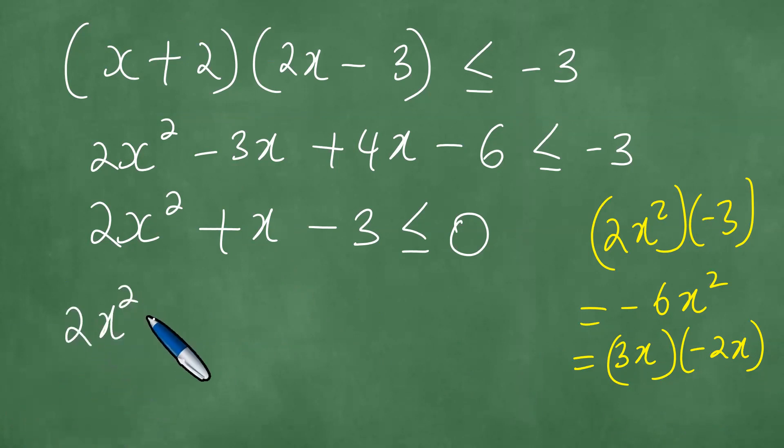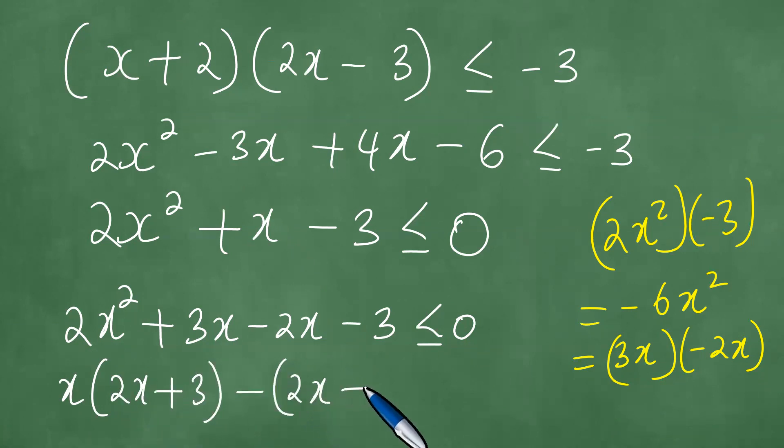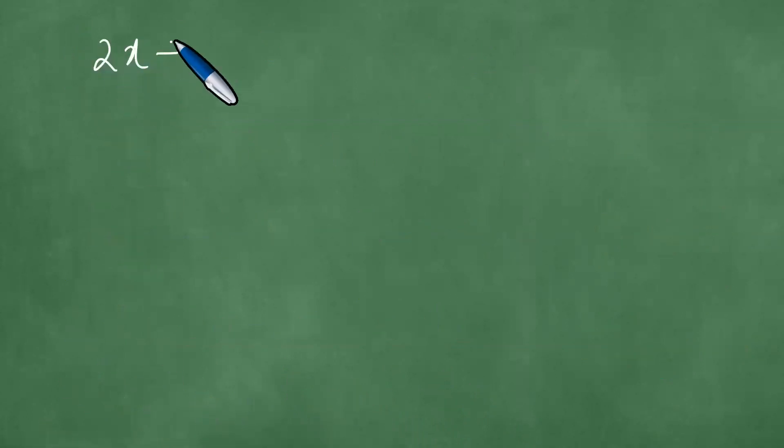Which means then we have 2x² + 3x - 2x - 3 ≤ 0. We're able to notice at this point that 3x - 2x gives us +x. Factoring out an x here, we have x(2x+3) - 1(2x+3) ≤ 0. At this point, we can see that 2x+3 is the common factor. If you pull out 2x+3, we have (2x+3)(x-1) ≤ 0.